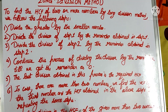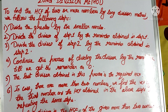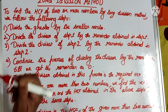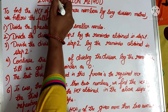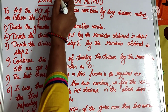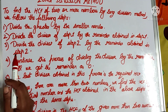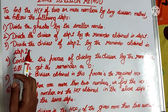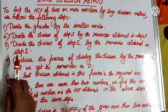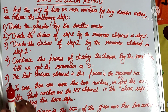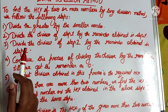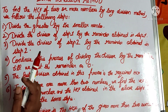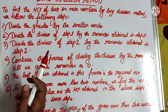Good morning students. Today we are going to discuss HCF by long division method. We have already discussed two methods of HCF — one by listing of factors and the second one was prime factorization. Now the third one is the long division method.